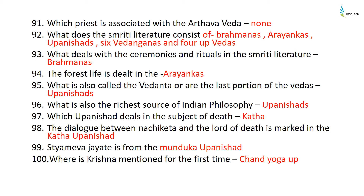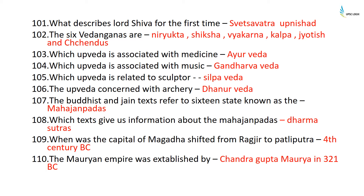The Katha Upanishad deals with the subject of death, and the dialogue between Nachiketa and the Lord of Death is marked in it. Satyameva Jayate is from the Mundaka Upanishad. Krishna is mentioned for the first time in the Chandogya Upanishad. Lord Shiva is described for the first time in the Shvetashvatara Upanishad. The six Vedangas are Nirukta, Shiksha, Vyakarana, Kalpa, Jyotisha, and Chhandas.